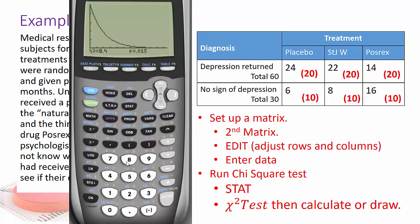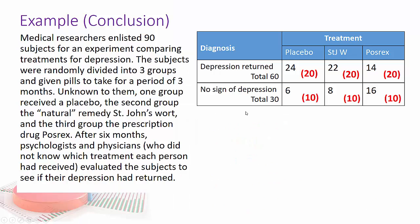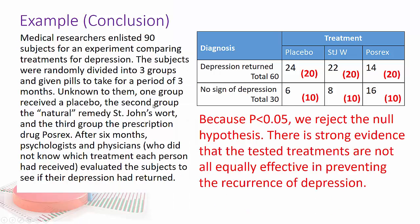So that's the probability is 0.015. Well, based on that, we can draw the conclusion since the probability is less than the alpha level we set, which in this case we're kind of using the default of 0.05, we reject the null hypothesis. There is strong evidence that the tested treatments are not all equally effective in preventing the recurrence of depression.